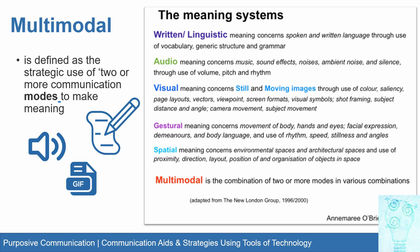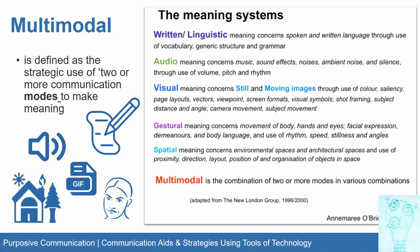Gestural meaning concerns movement of the body, hands and eyes, facial expressions, demeanor, body language, and the use of rhythm, speed, stillness, and angles. Spatial meaning concerns environmental and architectural spaces, and the use of proximity or distance, direction, layout, position, and organization of objects in space. Multimodal is the combination of two or more of these modes.